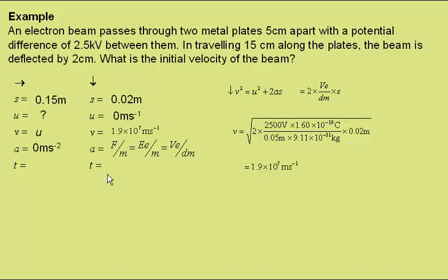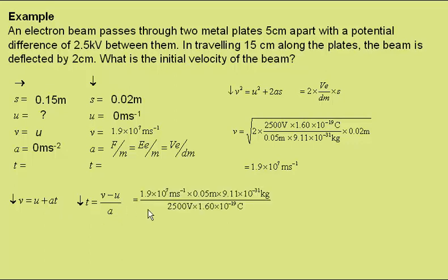Next, I'm going to try to find the time in the vertical direction, which will be the same as the time in the horizontal direction. For this, I can use v equals u plus at, rearranging for t, not forgetting u is 0, which gives these values, giving a time of 2.1 nanoseconds. I'm going to put that figure here, and also here.